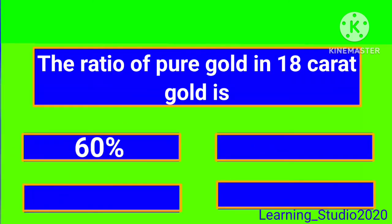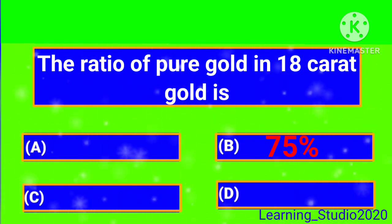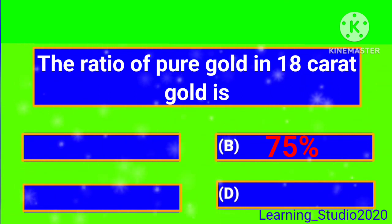The ratio of pure gold in 18 karat gold is... The correct answer is 75%.